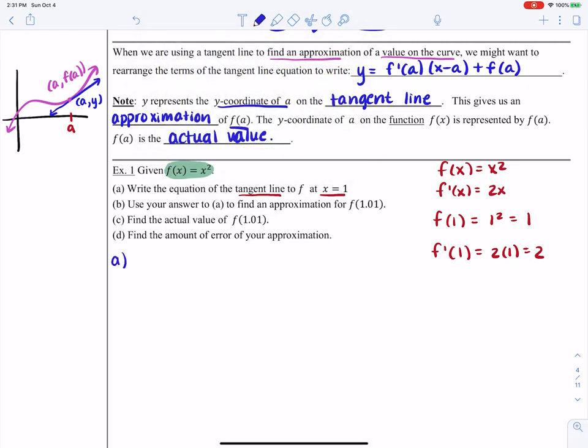So my tangent line would be y minus 1 is equal to 2 times x minus 1. But if I take this tangent line and I solve it for y, I get 2 times x minus 1 plus 1.